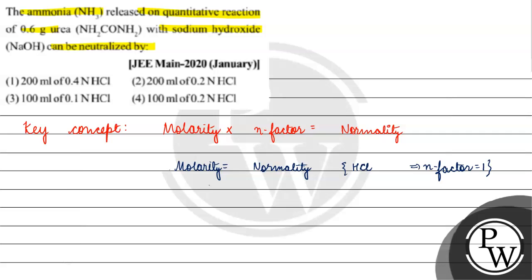Now, to solve this question, ammonia is formed from the reaction of urea with sodium hydroxide. Basically, we get Na2CO3 and NH3 (ammonia).